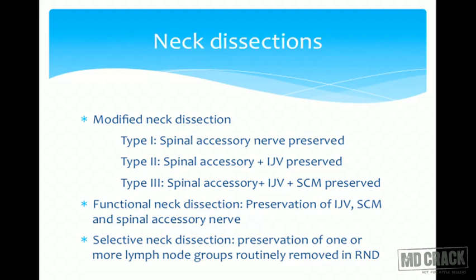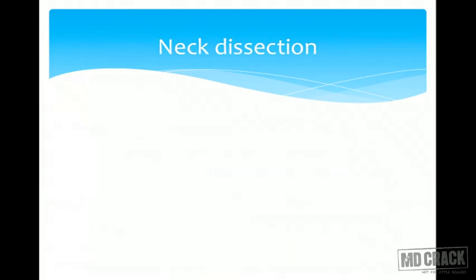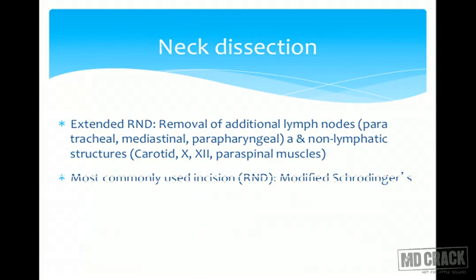Functional neck dissection is the preservation of all three structures: the internal jugular vein, sternocleidomastoid, and spinal accessory nerve. Selective neck dissection is the preservation of one or more lymph node groups routinely removed in radical neck dissection. Extended radical neck dissection involves removing all structures in radical neck dissection plus additional lymph nodes such as paratracheal, mediastinal, or parapharyngeal, or non-lymphatic structures like the carotid, 10th nerve, 12th nerve, or paraspinal muscles.